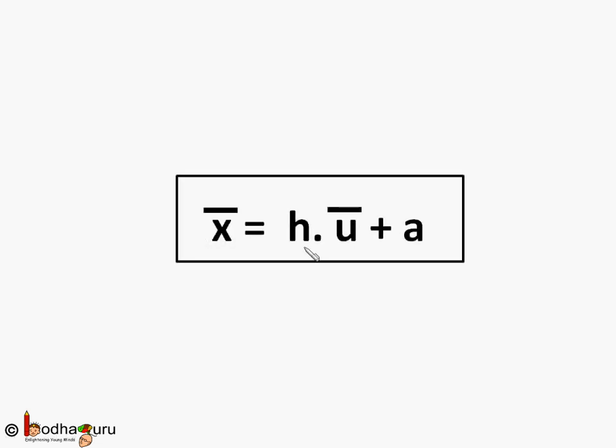So x bar will be h times u bar plus a. This method is called step deviation method.